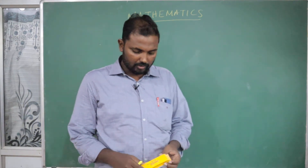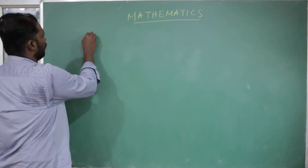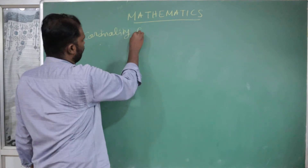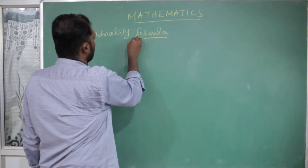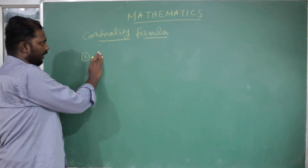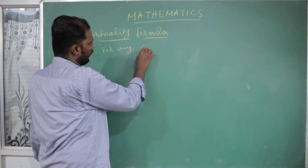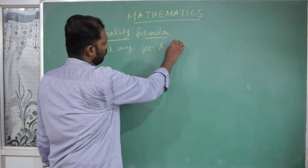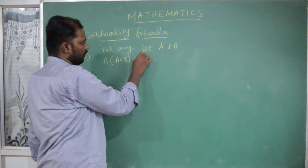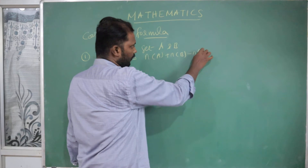Hi everyone. In this class we will talk about the cardinality formula. The cardinality formula: for any sets A and B, N of A union B is equal to N of A plus N of B minus N of A intersection B.